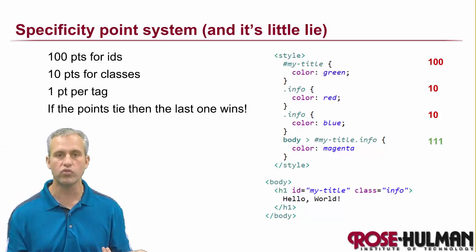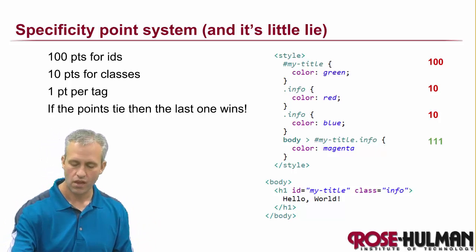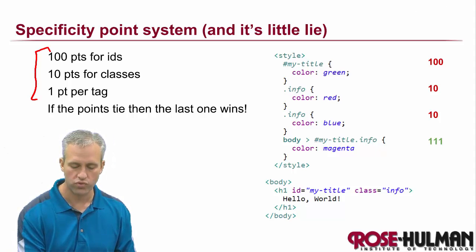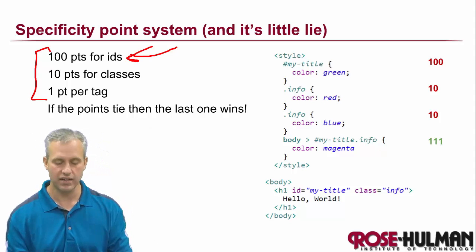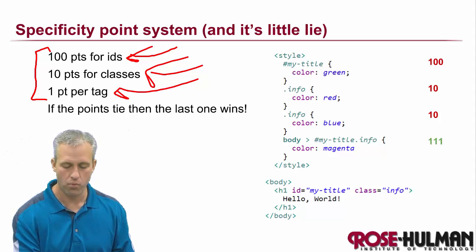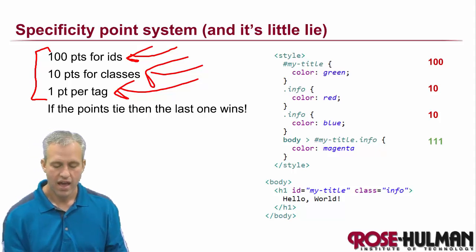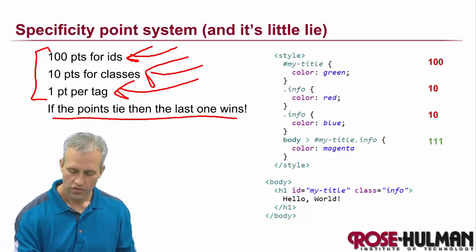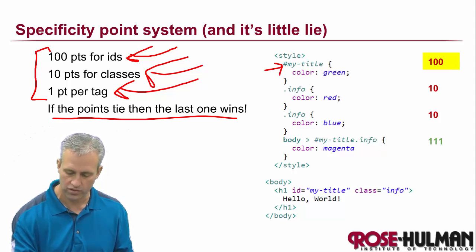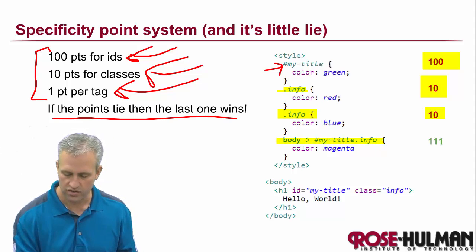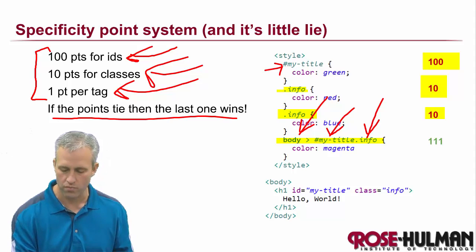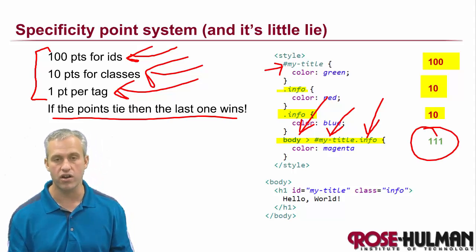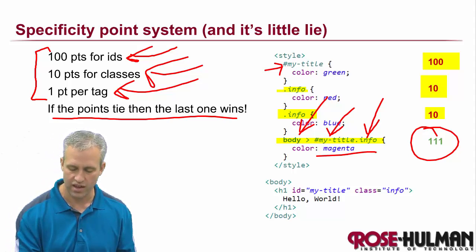The best way to talk about specificity is through the point system. You add 100 points for every ID, 10 points for every class, and 1 point for tags — tags are the least specific so they get only one point. If things happen to be a tie, then whoever's last wins. So here we've got an ID worth 100 points, a single class worth 10 points, and another class worth 10 points. One rule has one ID (100), one class (10), and one tag (1), for a total of 111. That one is the winner, and the text is magenta.